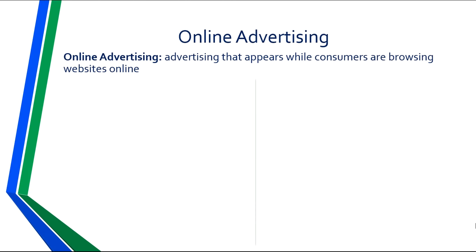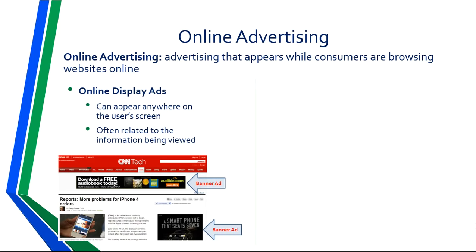In addition to a website, many companies participate in online advertising, which is advertising that appears while consumers are browsing the internet. The first form is an online display ad, which can appear anywhere on a user's screen and the content is often related to the information being viewed on that web page. Today we see display ads that include animation, video, sound, and interactivity to capture the customer's attention. You've probably heard these called banner ads, and since consumers tend to scroll past them, making them more interactive increases the likelihood they'll be seen.